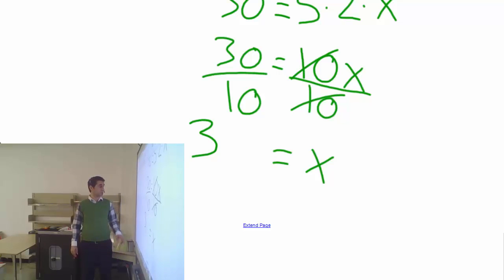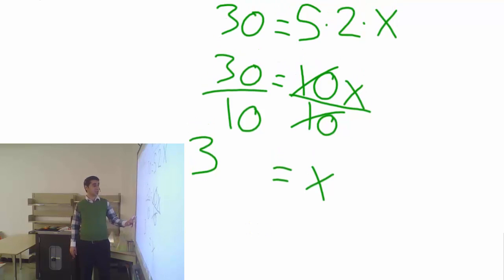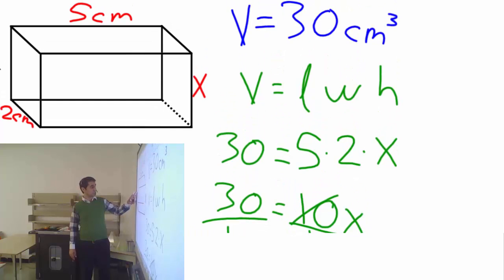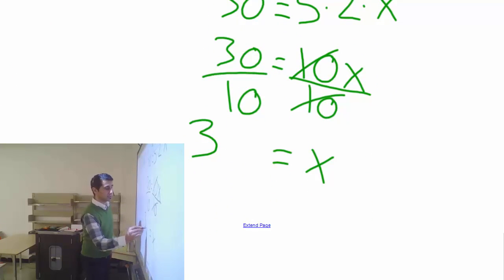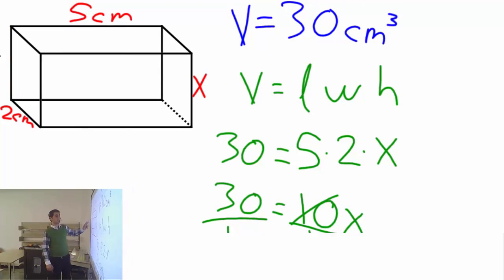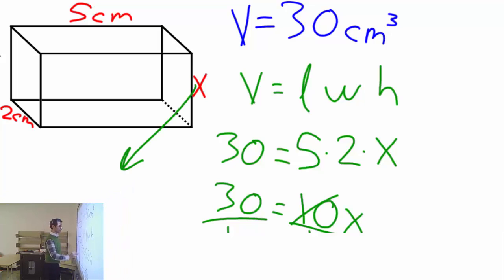Now x is alone and 30 divided by 10 is 3. I am not surprised because we created this question, we did this before. I knew we were going to find the missing side as 3. Let's make sure we write down the unit. So the missing side x is 3 centimeters.